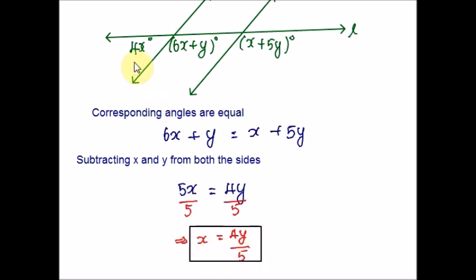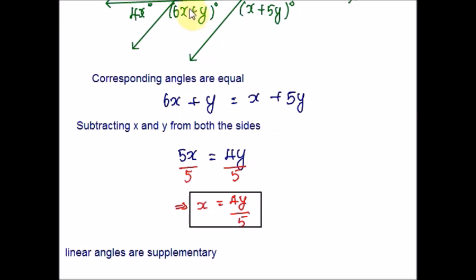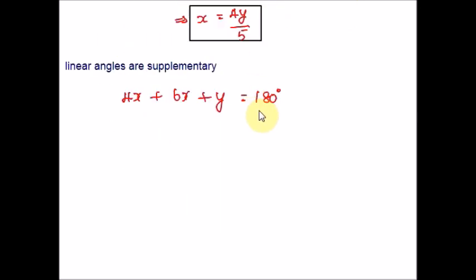Now let us simplify this equation. Shift all X's to one side and all Y's to the other side by subtracting X from both sides and Y from both sides. Dividing both sides by 5, we get an equation relating X and Y. Now please look at the angles 4X and 6X + Y — these two are on a straight line, so they are linear angles and therefore supplementary. Adding them: 4X + 6X + Y = 180 degrees, which gives 10X + Y = 180.